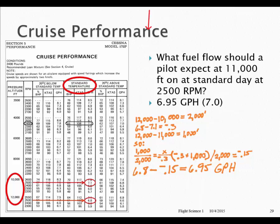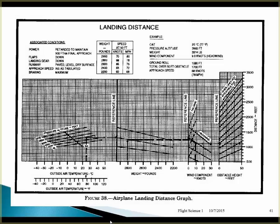Here we have a landing distance chart — the same kind of chart we've been talking about in class, but for landing distance instead of takeoff distance. It works just the same way. Our conditions are: outside air temperature of 30 degrees, pressure altitude of 2,700 feet, wind is a five-knot tailwind, and weight is 2,500 pounds.